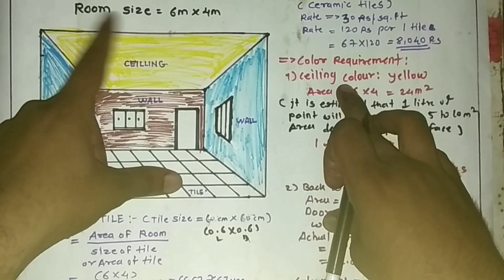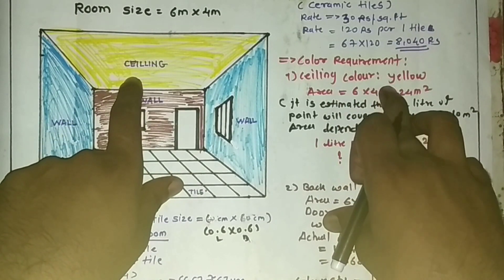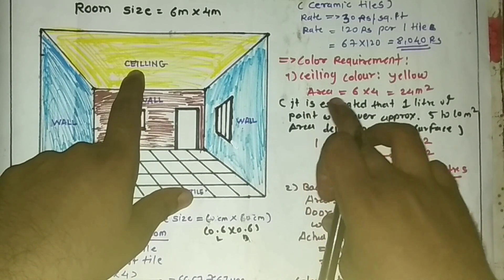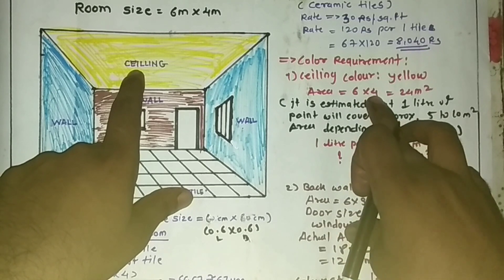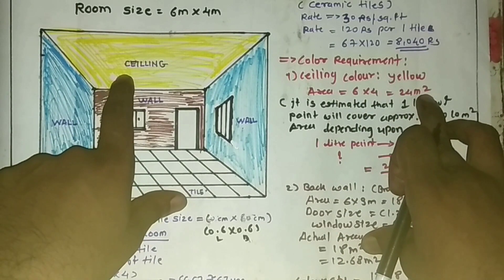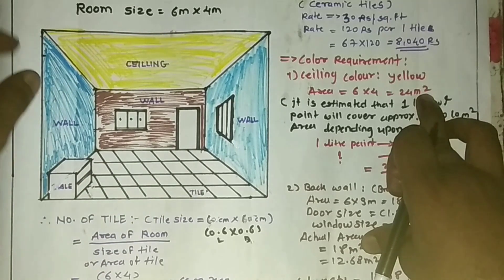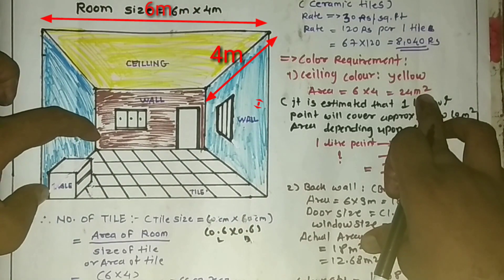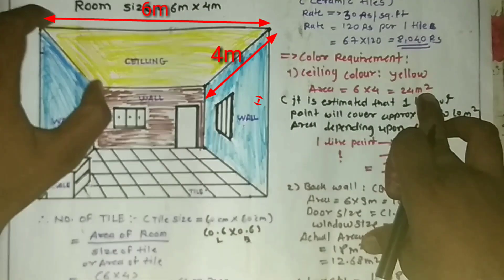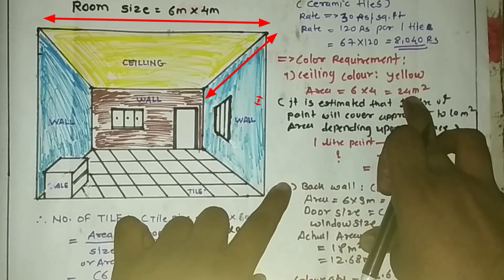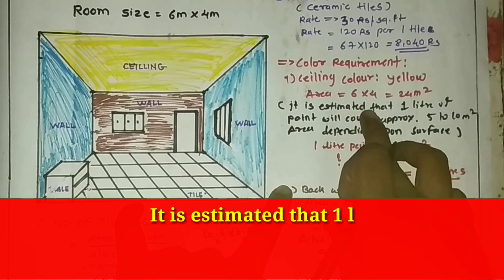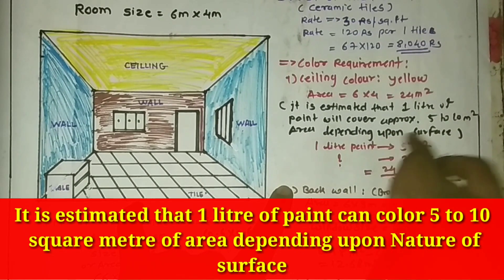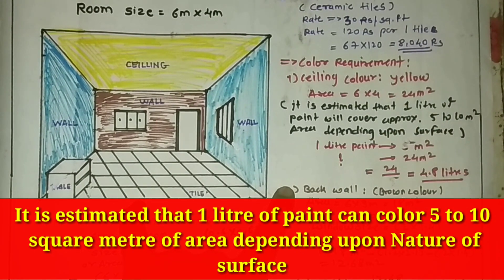I will calculate the ceiling paint requirement. You can see the yellow colored ceiling. First, calculate the area: 6 × 4 = 24 square meters — I have to paint 24 square meters. You have to remember that it is estimated that one liter of paint will cover approximately 5 to 10 square meters depending upon the surface.